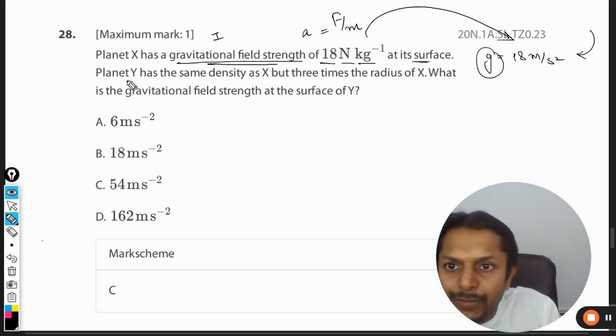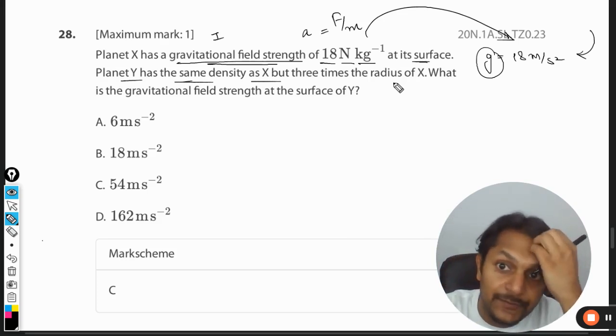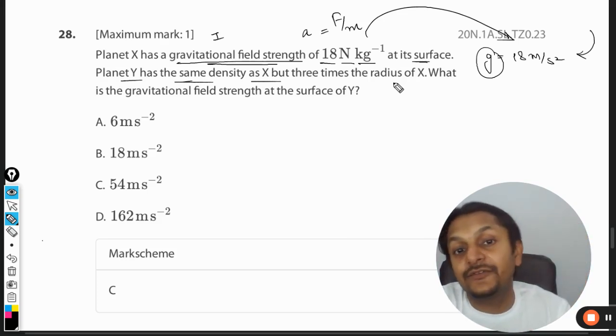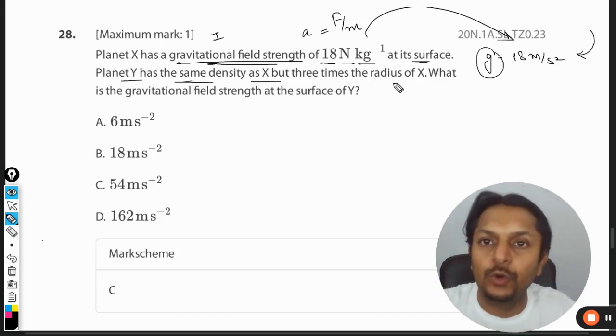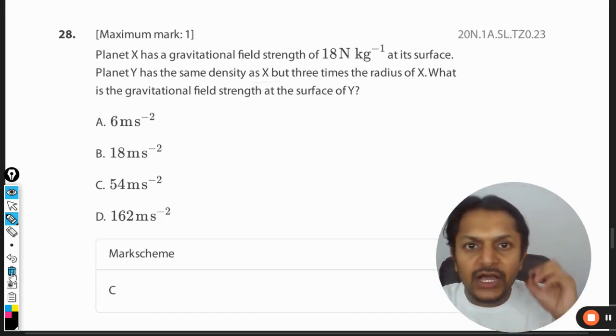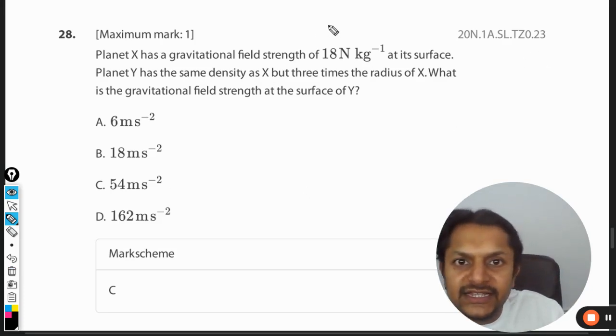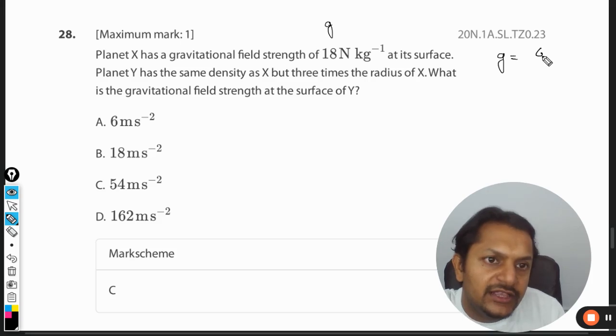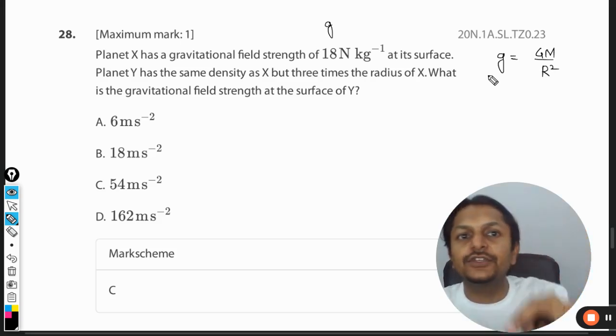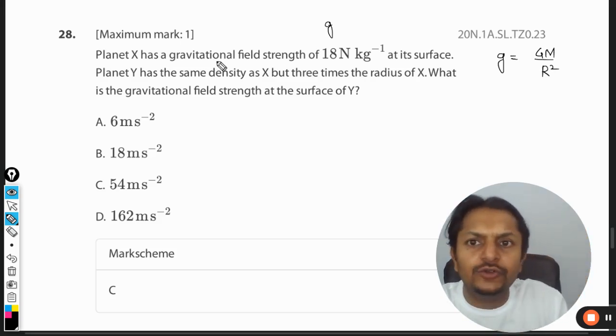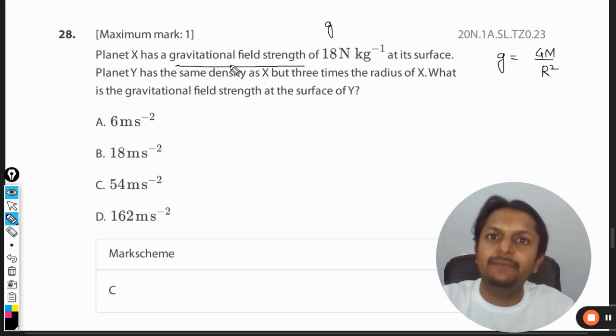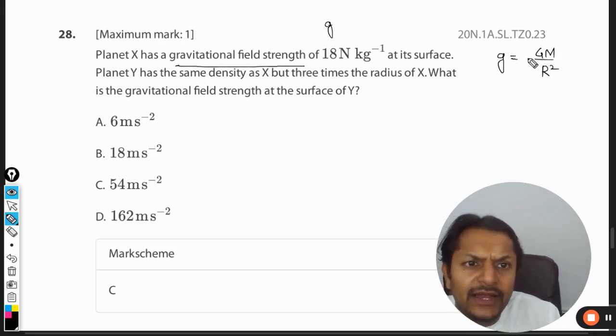One thing is the same. Planet Y has the same density as X but three times the radius. What is the gravitational field strength at the surface of Y? A bit confusing question, do not worry at all. So let us start again. This is the value of g which is given. The formula that we use for the acceleration due to gravity at the surface of a planet is g M by R squared. Do not get confused—gravitational field strength is same as the acceleration due to gravity. We can use the same formula; they just have different names. This is given, and for planet X...